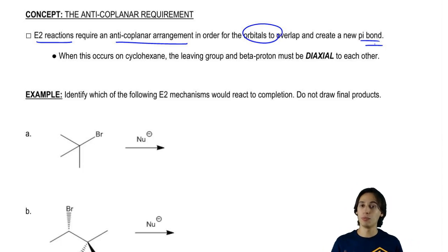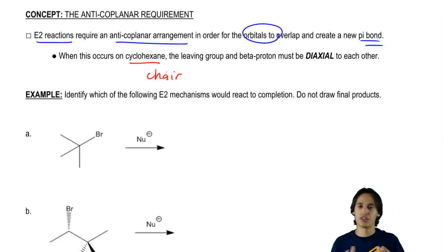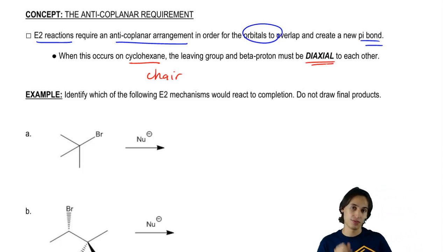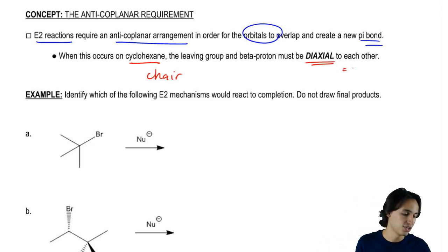On top of that, there's one more thing I should know, which is that when you have a leaving group and a beta hydrogen on a cyclohexane, that's actually going to form a chair. Remember that cyclohexanes usually are in the chair conformation. When you're dealing with an elimination on a chair, instead of calling it anti-coplanar, we're actually going to call it a diaxial requirement. This is the same thing as anti-coplanar.